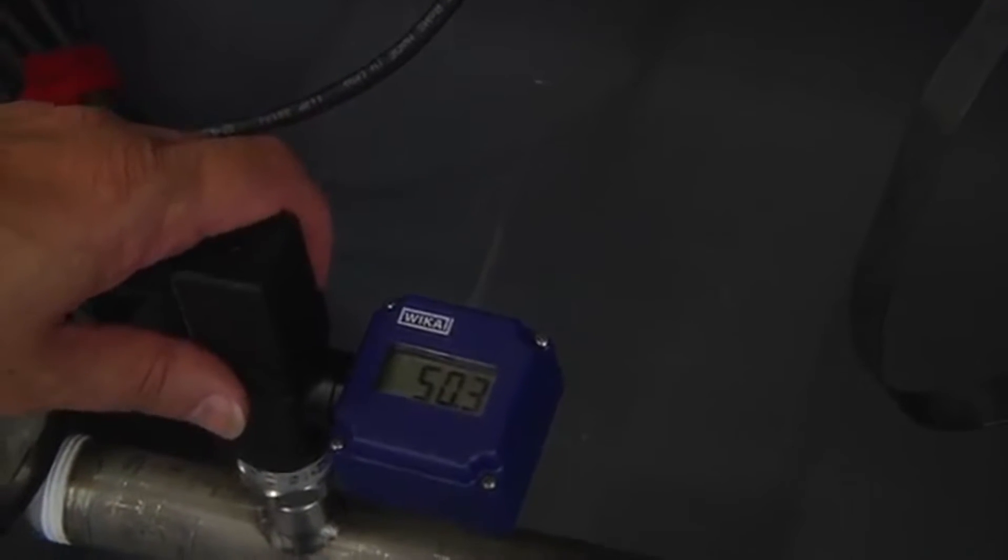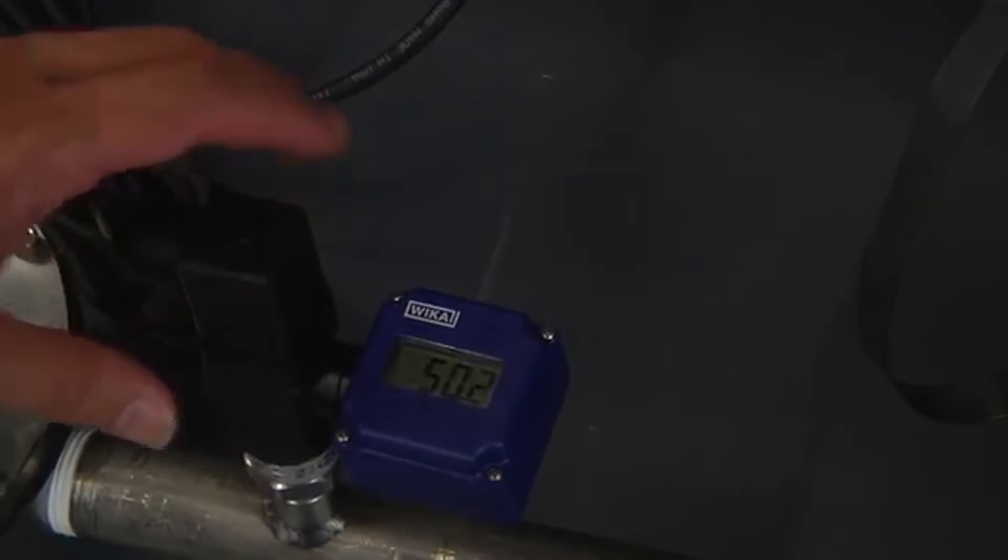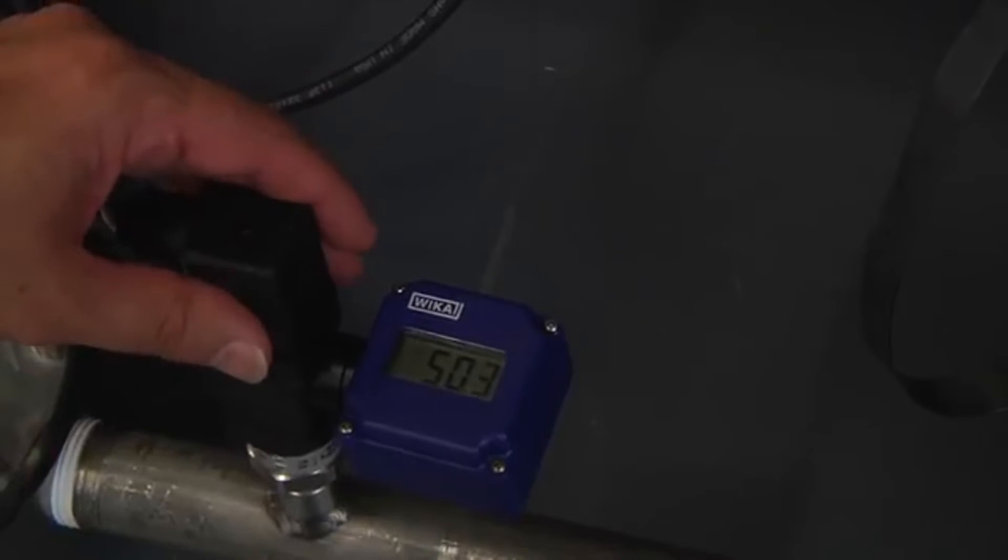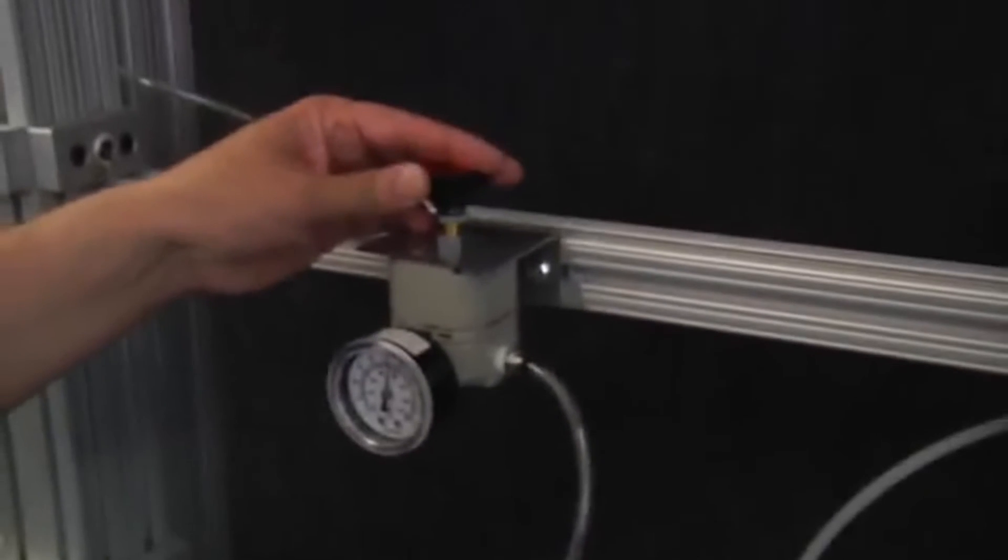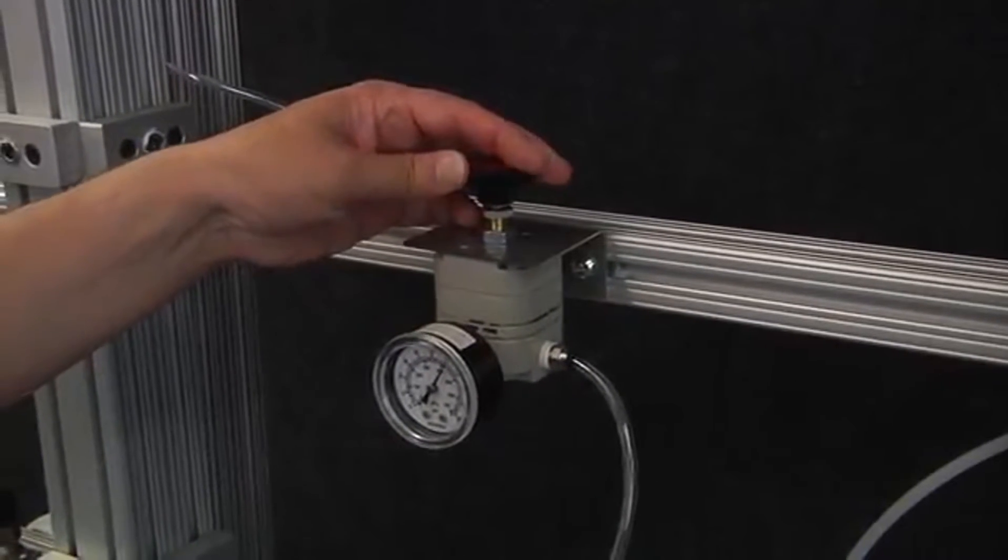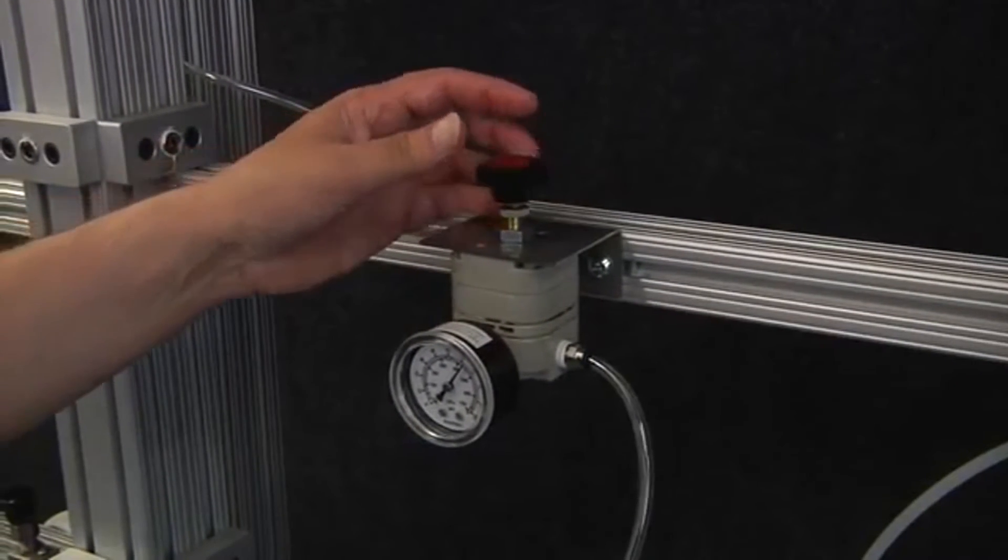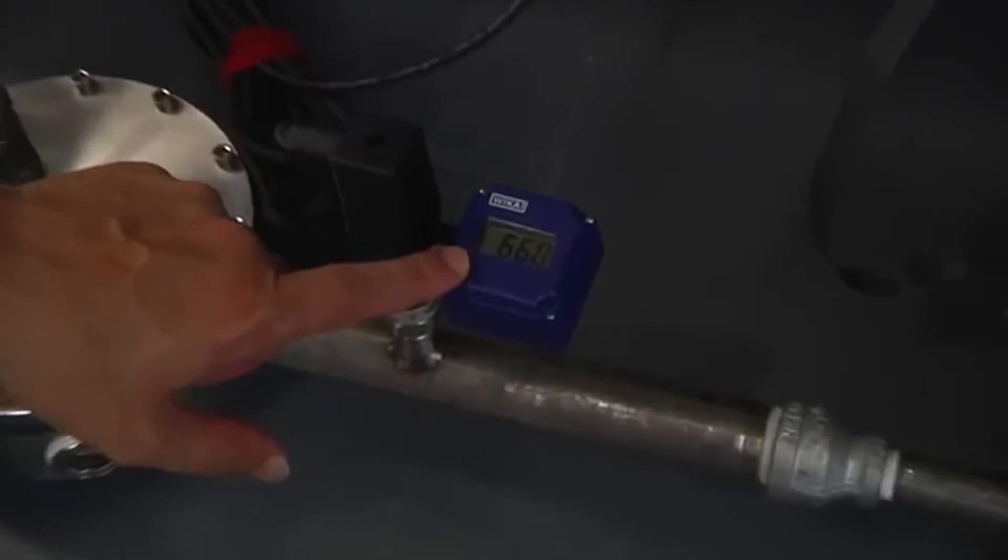And now to show the repeatability, I'm going to adjust the pilot pressure on the Equilibar Back Pressure Regulator to get something more like 65 psi on the pump curve. That's going to give us a much lower flow rate. So I'll run this pressure up to about 65. And what we'll see is when we have 65 psi on the output of the pump, that the flow meter is at a much lower value.